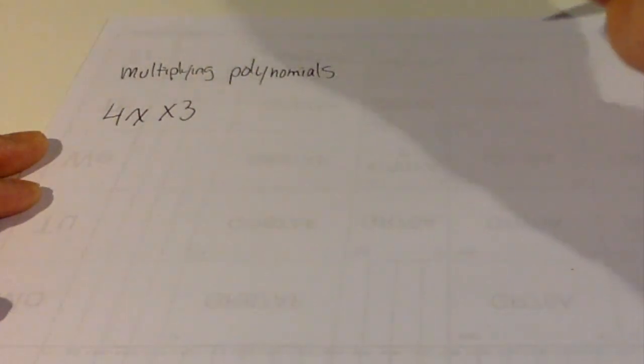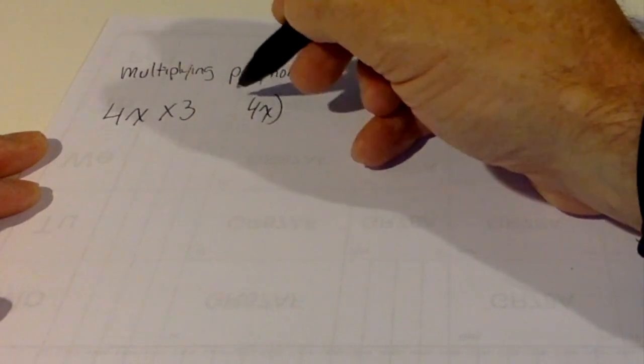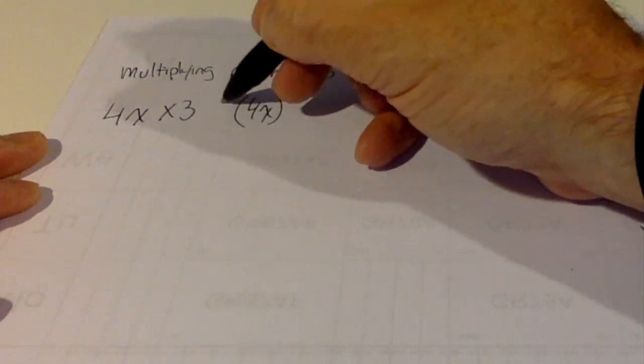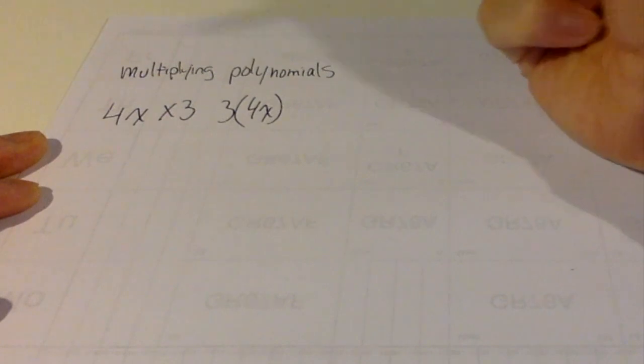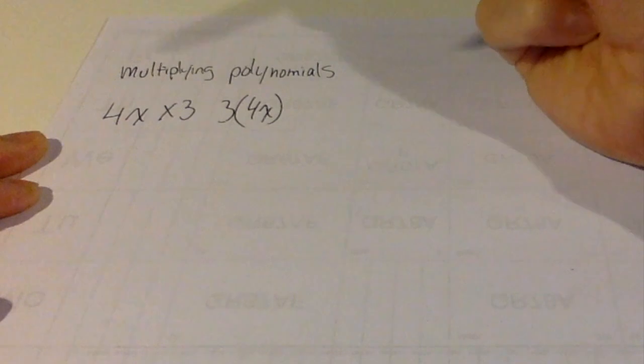It probably wouldn't be written like this. It might be written more like 4x times 3. So it makes it confusing if you've got the x as a variable right next to the multiplication sign. So let's say we've got something like this.